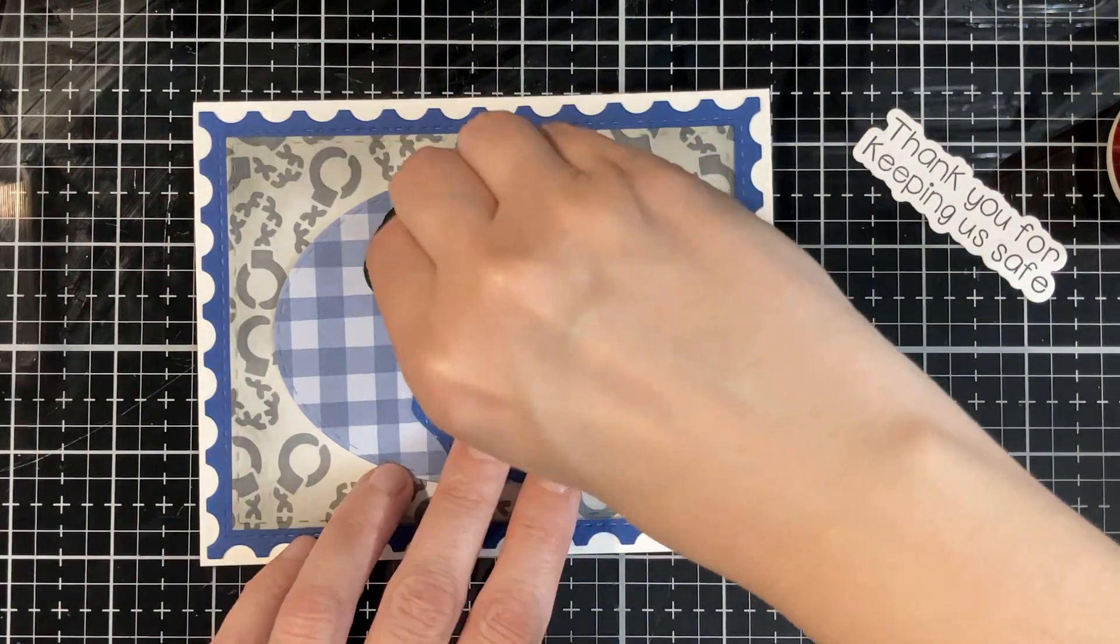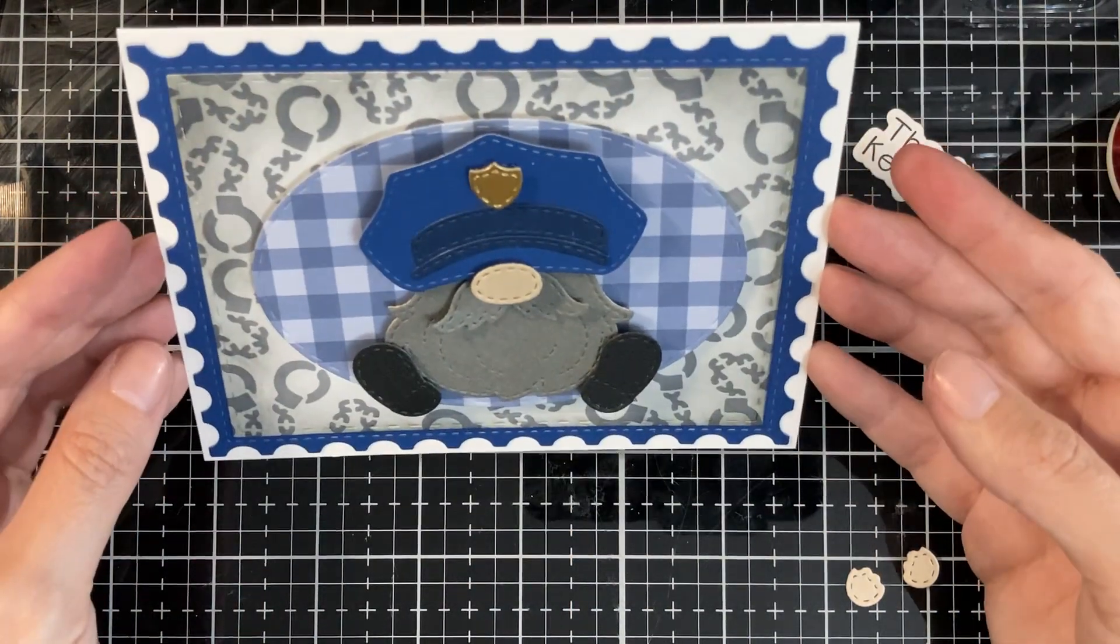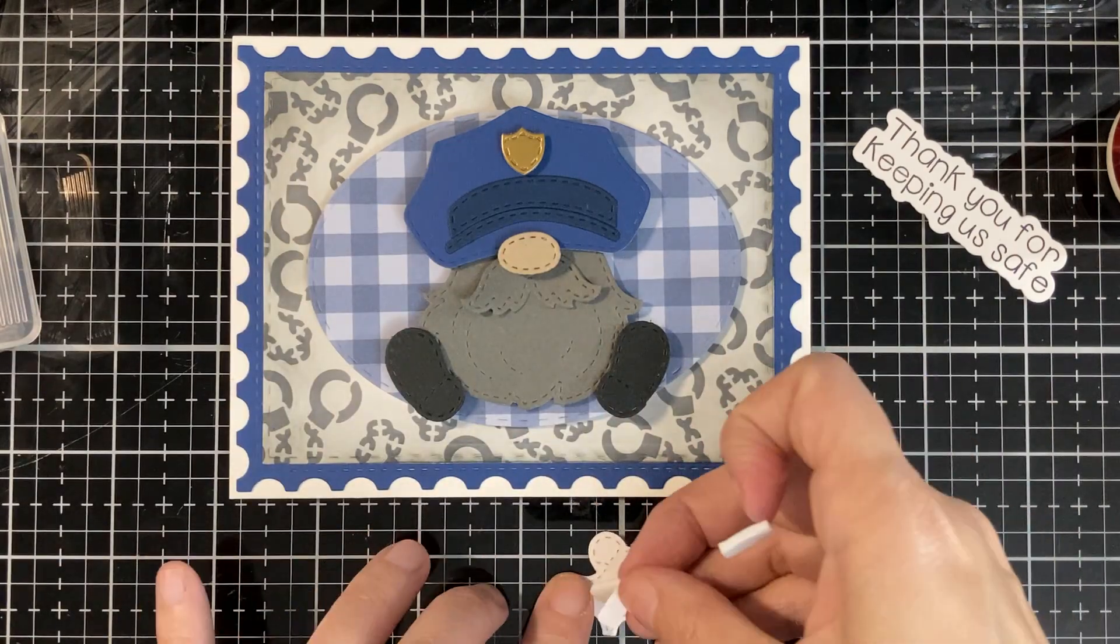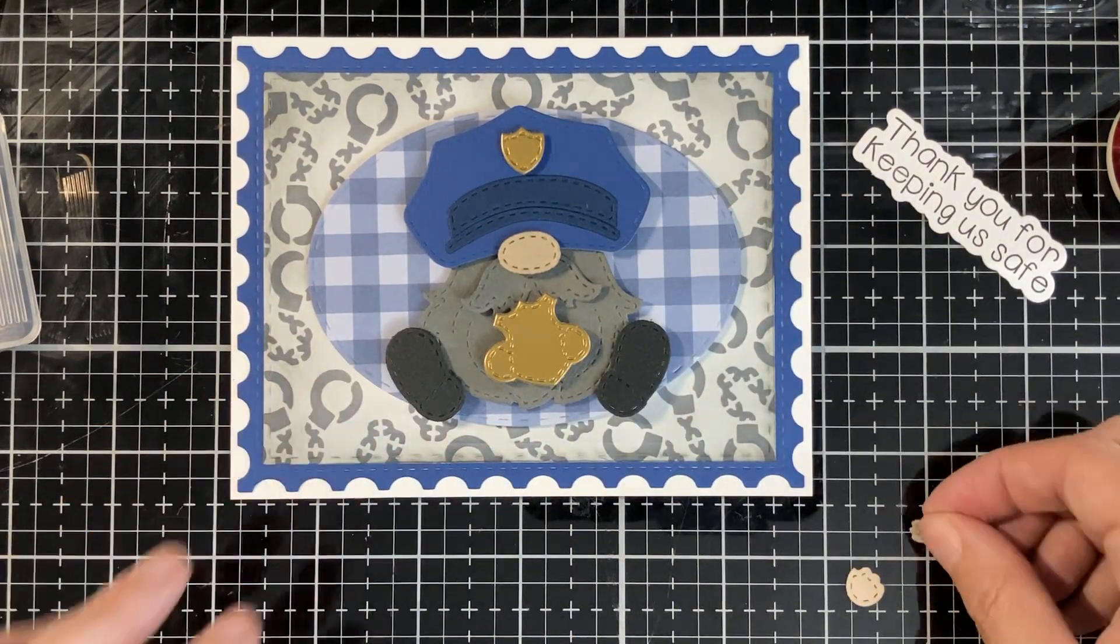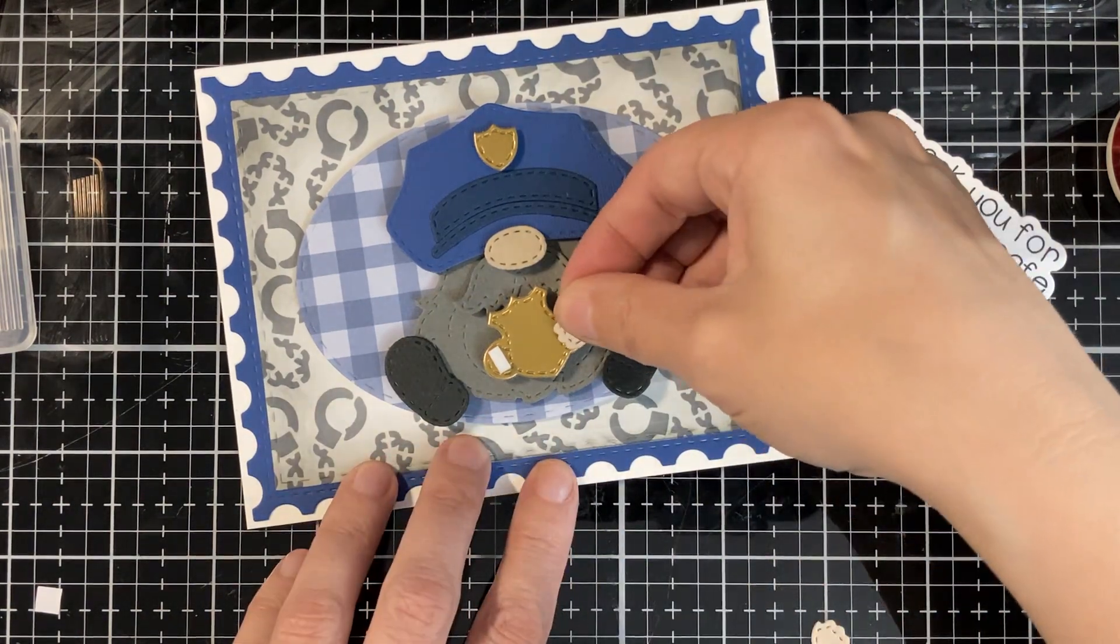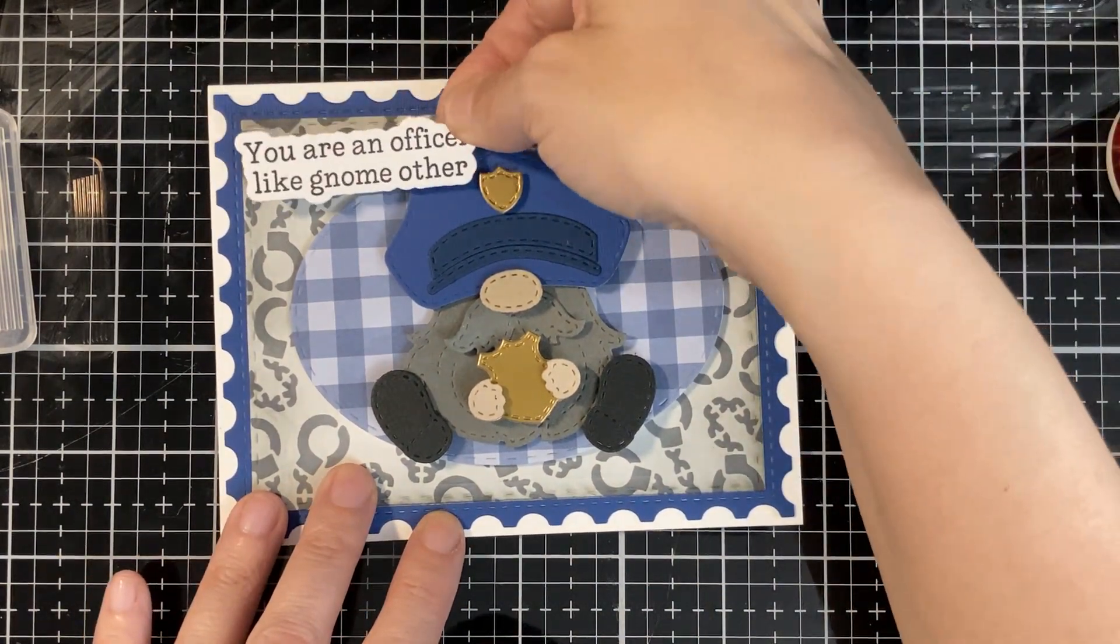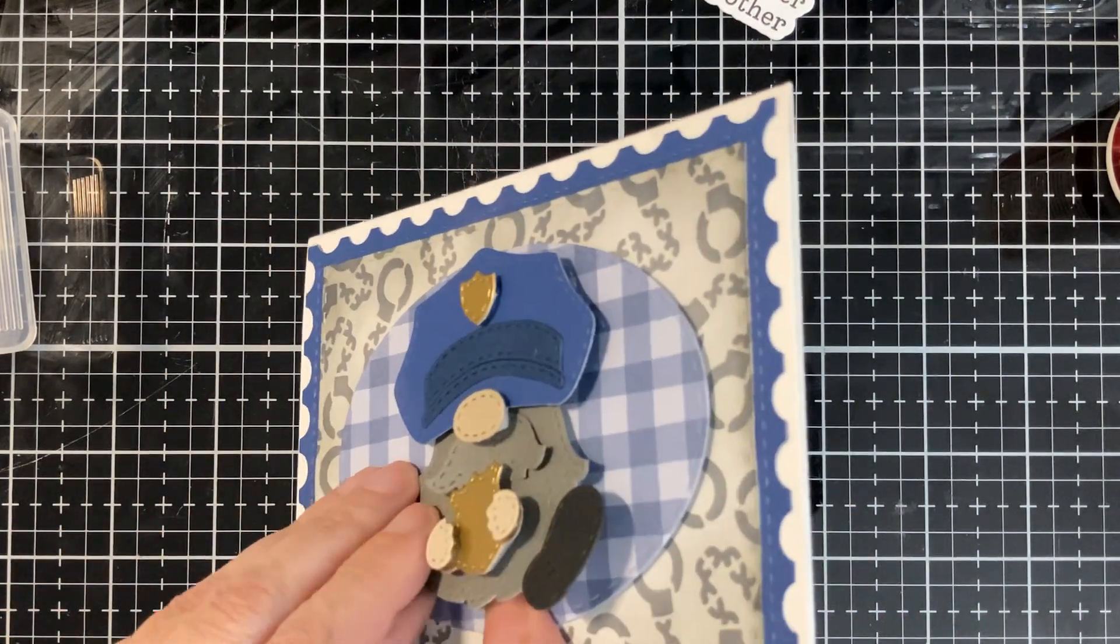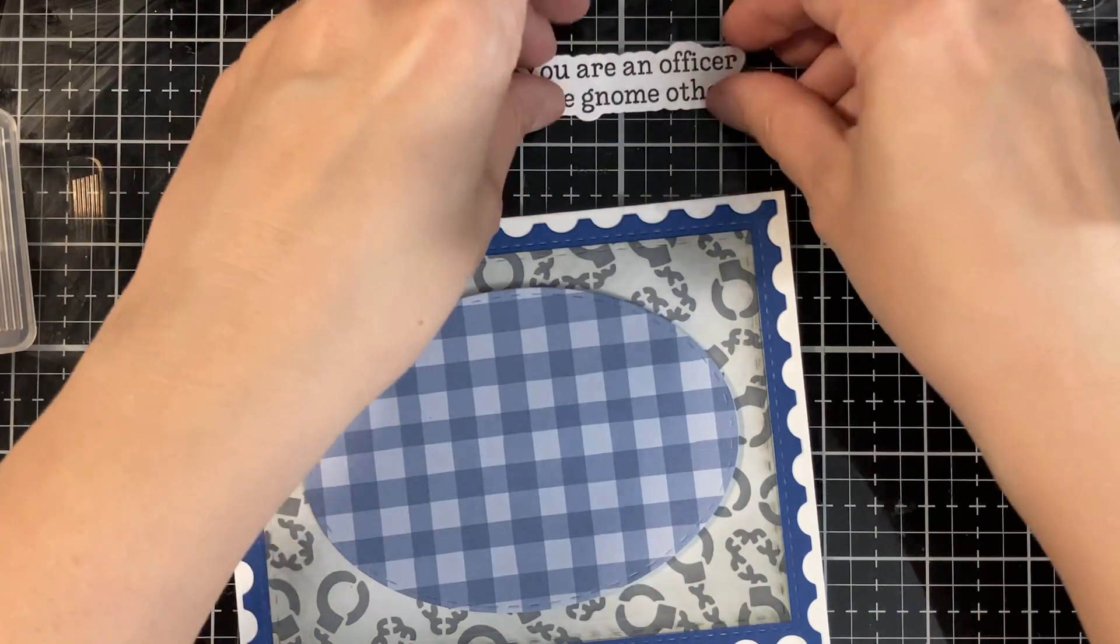I do glue him down with some pop dots. Like I said, after it's all done I will realize that I don't have no room for my sentiment. I do put the big badge with two layers of pop dots on that badge and then another layer of pop dots for the hands. I like that to be the showcase. Here's my sentiment and I'm kind of looking. It's like, oh, I don't like it on top of the hat.